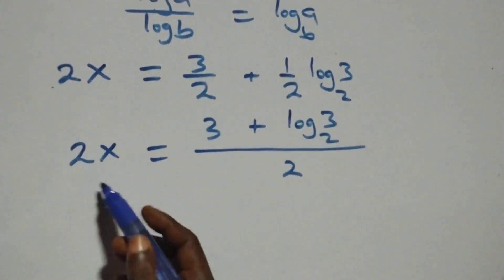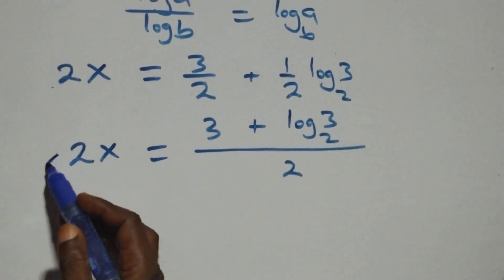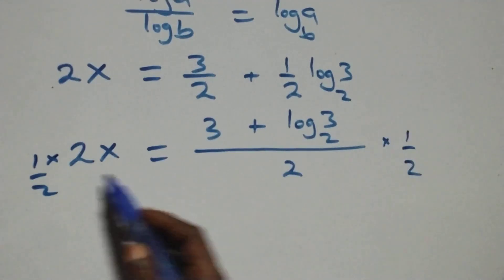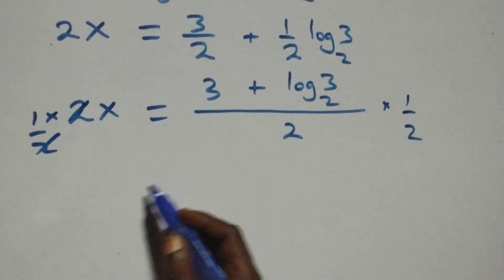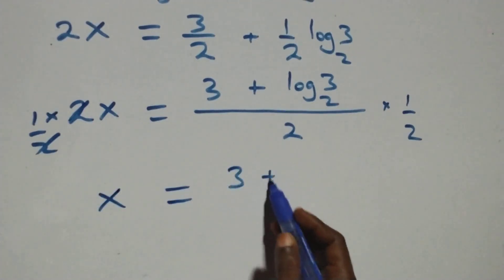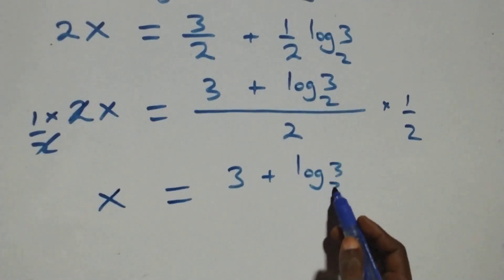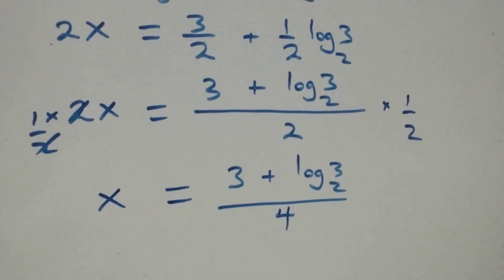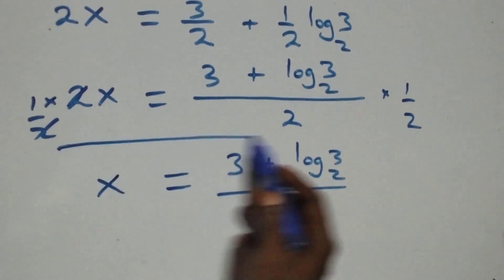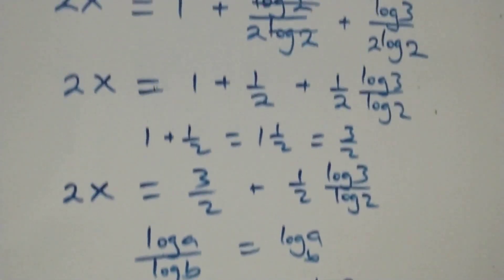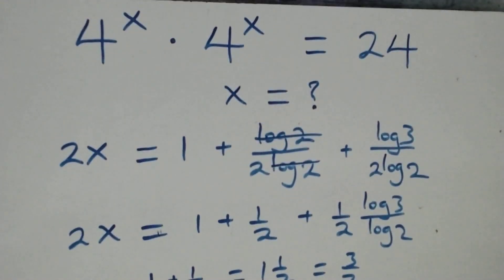To remove the 2 on the left, we multiply both sides by 1 over 2. The 2s cancel, and we have x equals (3 plus log₂3) over 4. Now let's check whether this satisfies the original problem.